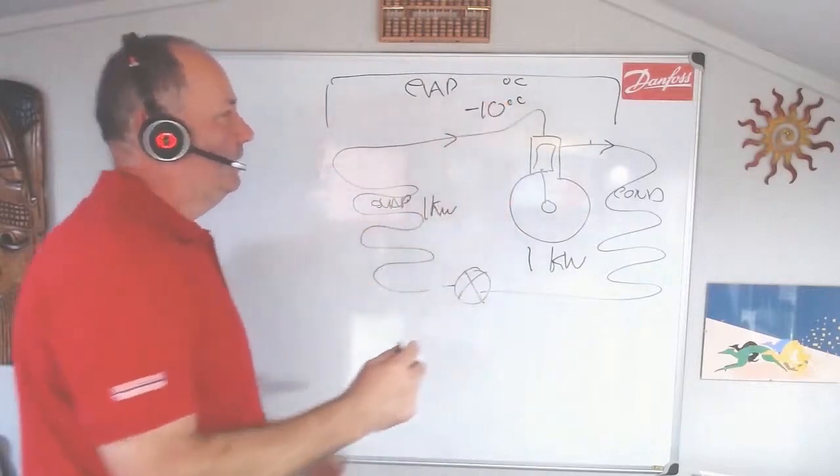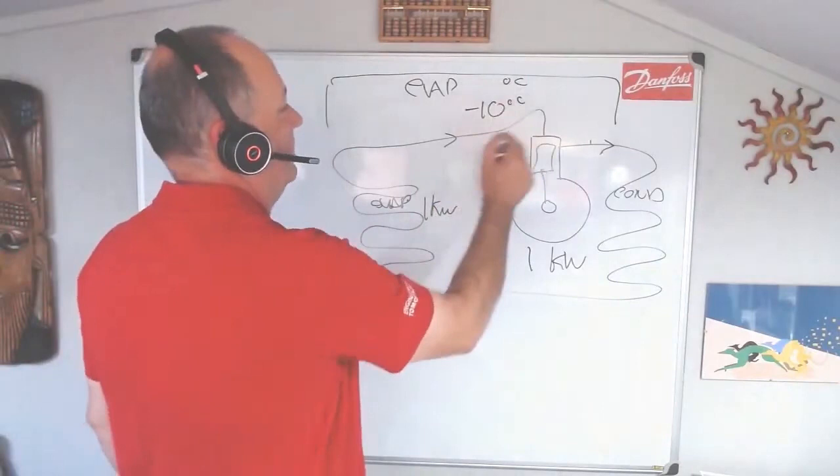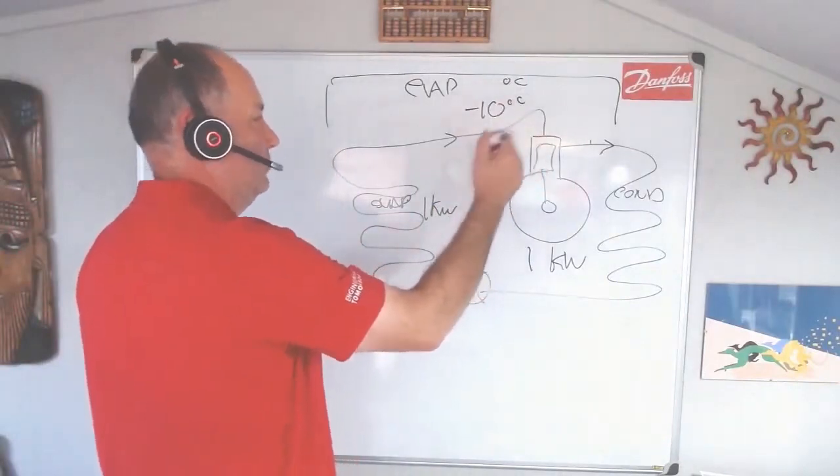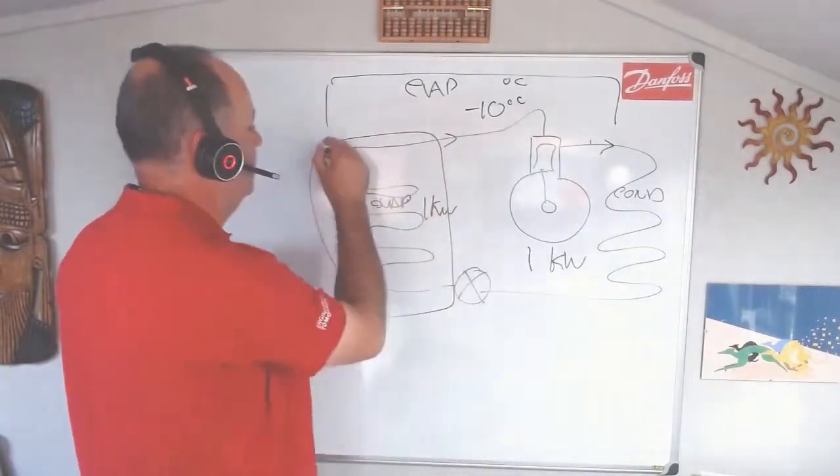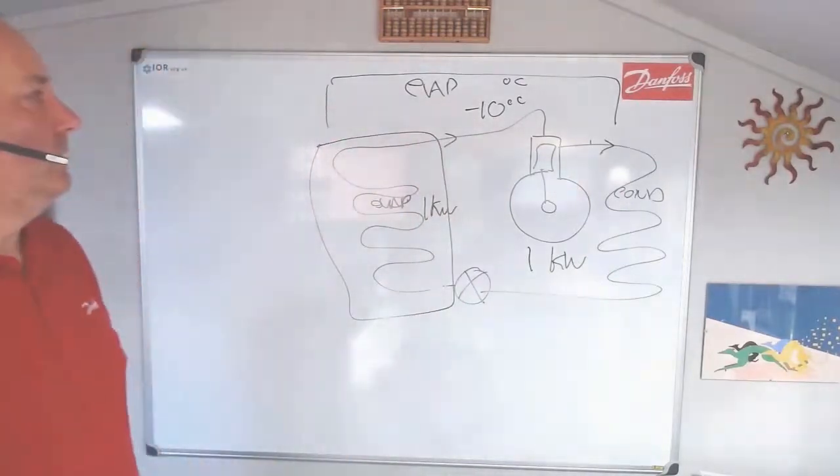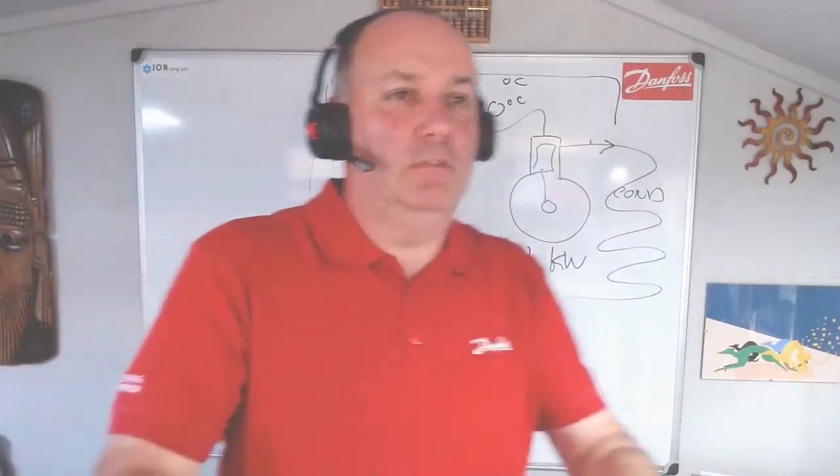What we're trying to do by capacity control is maintain the suction pressure, suction temperature, the evaporating temperature that we want in our evaporator where we want it. That's a very simple explanation. I hope that explains what we need to know.